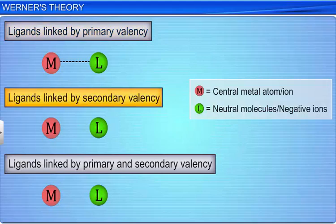If a ligand satisfies both the valencies, then it is shown by a thick as well as by a dotted line, and it is said to exhibit dual character.